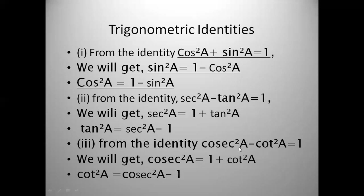Now let us see the third identity: cosec²θ minus cot²θ is equal to 1. From this identity we get two more. Transposing minus cot²θ to the other side, cosec²θ is equal to 1 plus cot²θ. For cot²θ, transpose cosec²θ to the other side to get 1 minus cosec²θ. Multiplying both sides by minus, the signs change, so cot²θ is equal to cosec²θ minus 1.